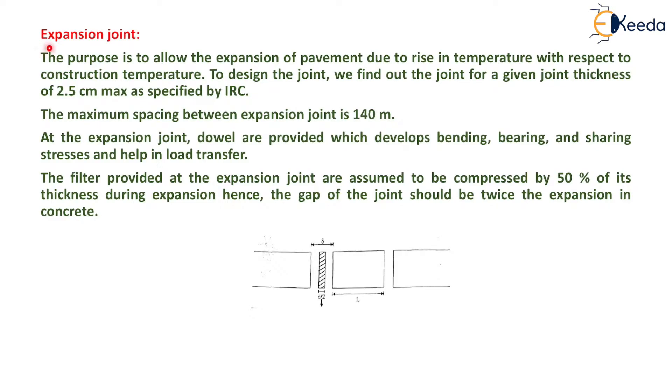Now we will study expansion joints. The purpose is to allow the expansion of pavement due to rise in temperature with respect to construction temperature. To design the joint, we find the joint width for a given joint thickness of 2.5 cm max as specified by IRC. The maximum spacing between expansion joints is 140 m.